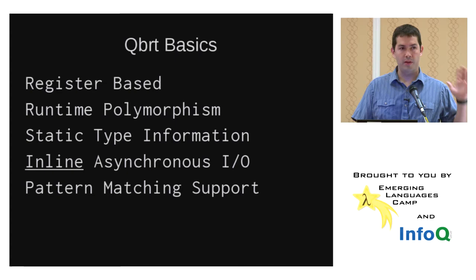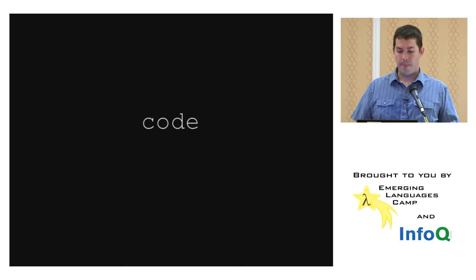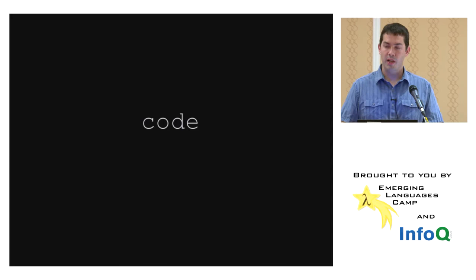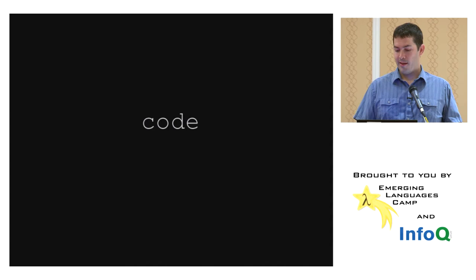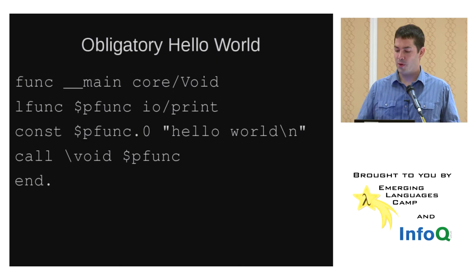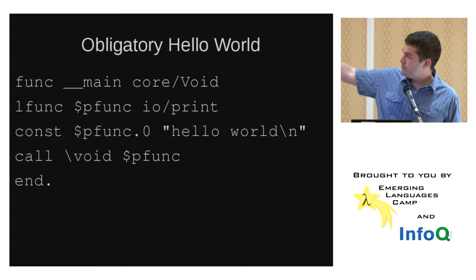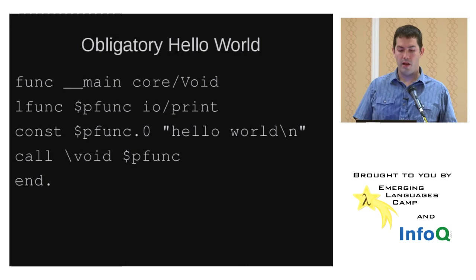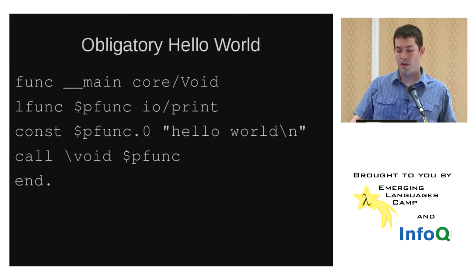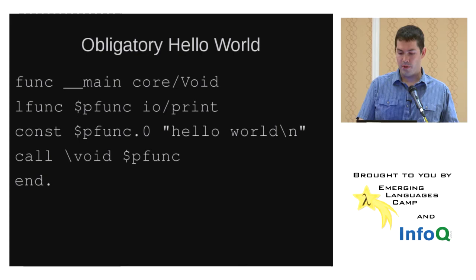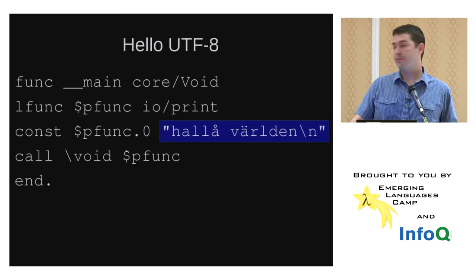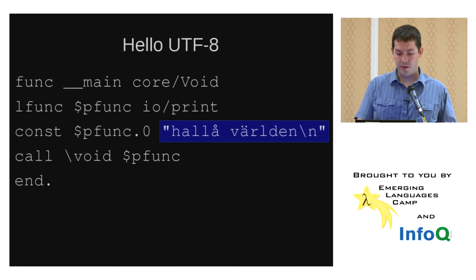Here's some code and features — it's a programming language so I want to show code, but it's an assembly language so I'll keep it to a minimum. Hello World: the first line declares the main function that returns void, the second line loads the print function into a register, the third line loads the Hello World constant into the first parameter of the print function, and the fourth line calls it. Pretty simple — obviously more lines than most languages, but it's an assembly language so that verbosity comes with it. Here's Hello World in Swedish — one of the nice things about a virtual machine is it handles UTF-8 for you.